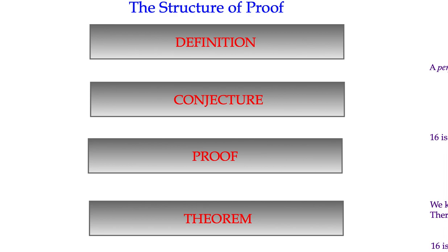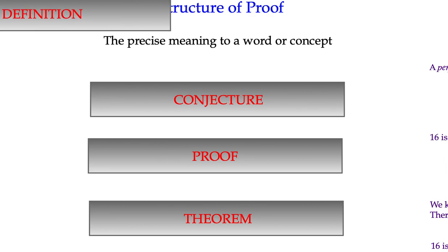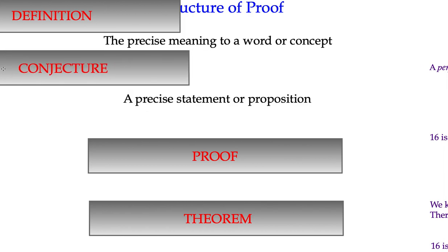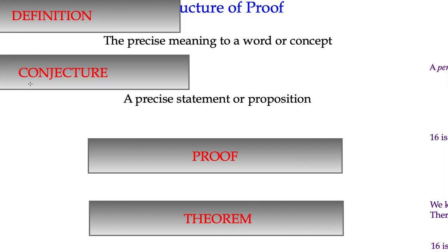And then it becomes a theorem or a rule once that's the case. So a definition, just to kind of recap then, a precise meaning. So we've got to be really precise about what we are working with. So there's no ambiguity, there's no confusion. The conjecture will be something like a statement or proposition. Again, it has to be precise. It can't be woolly. It has to state what it states.